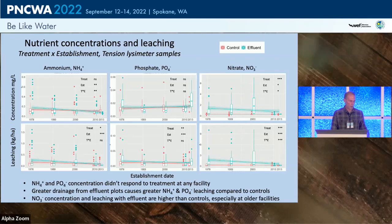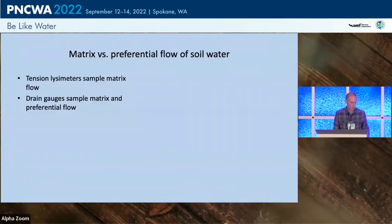Both for nitrate concentration and leaching we see nitrates being lost, suggesting there may be some nitrogen saturation occurring in these older facilities that's allowing nitrate to leach.